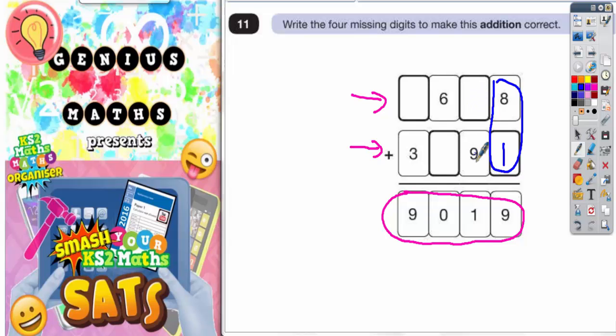So something plus 9 makes 1. Well something plus 9 can't make 1. So it has to make something that ends in a 1. And the next number that ends in a 1 would be 11. So something plus 9 would have to make something that ends in a 1 which would be 11. So this is going to be a 2. Because 2 plus 9 makes 11.